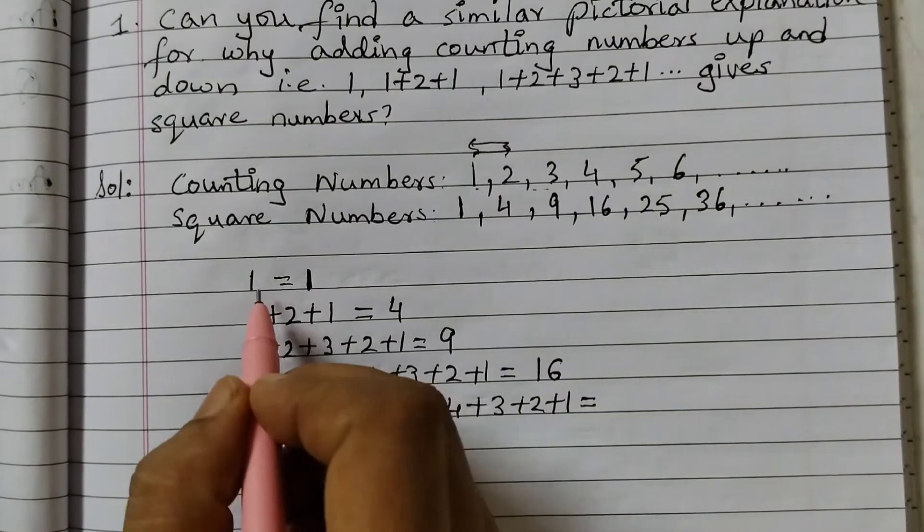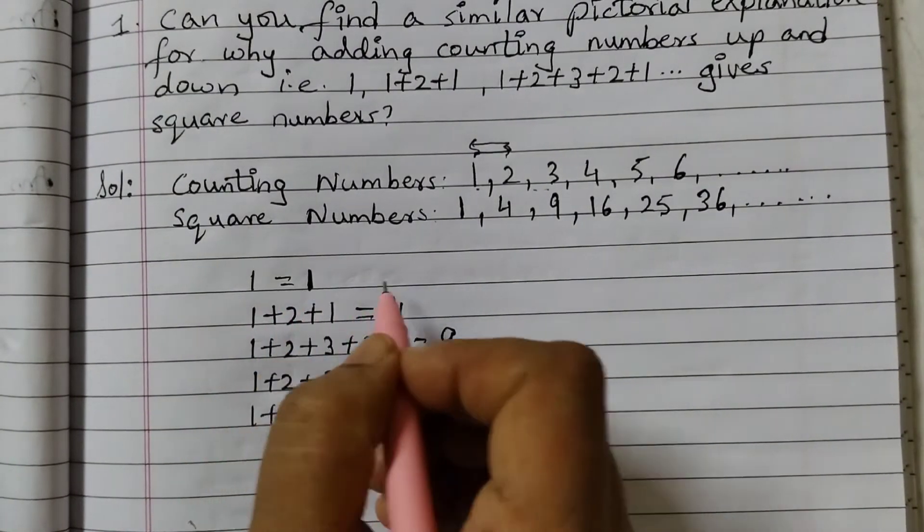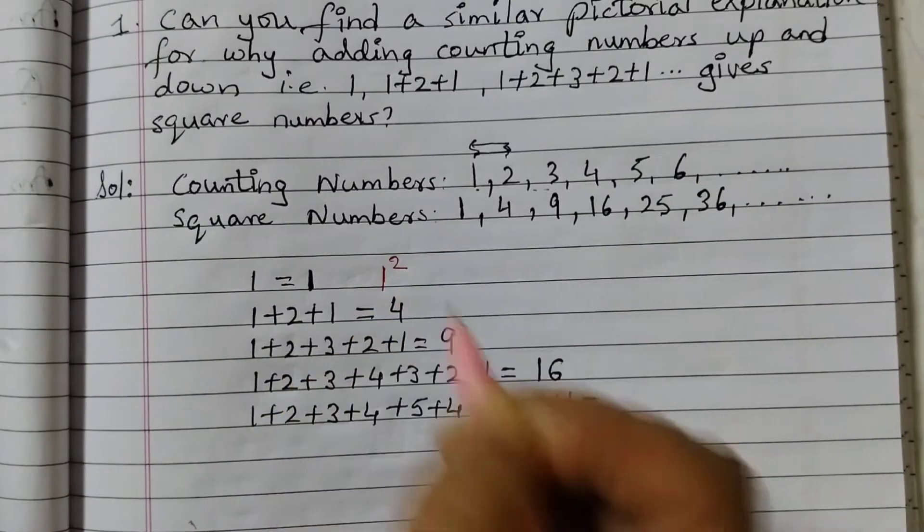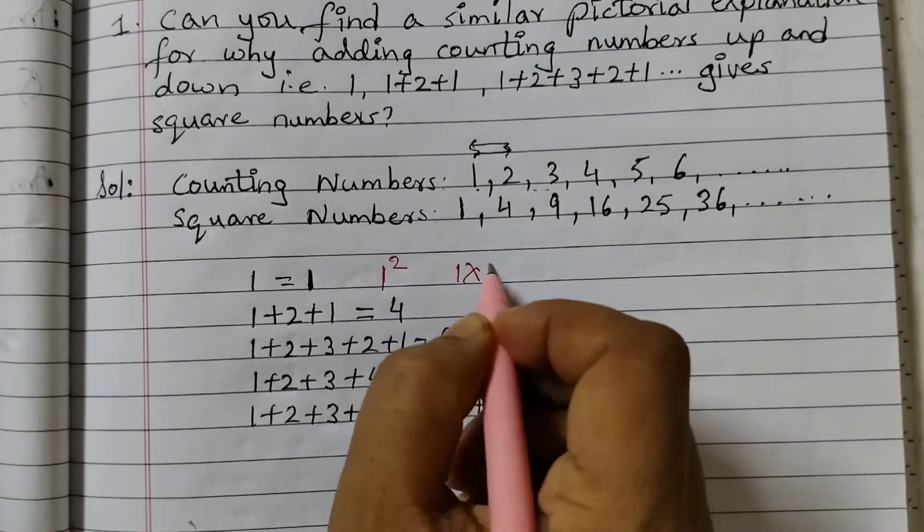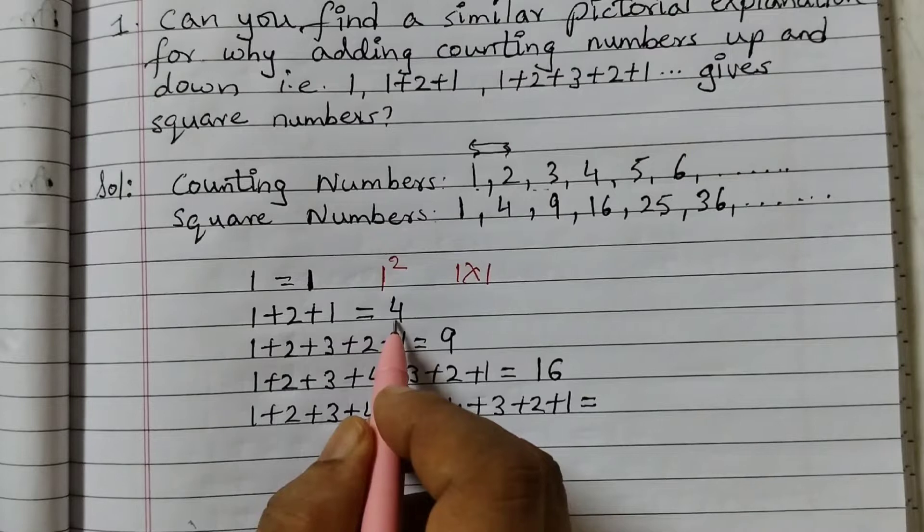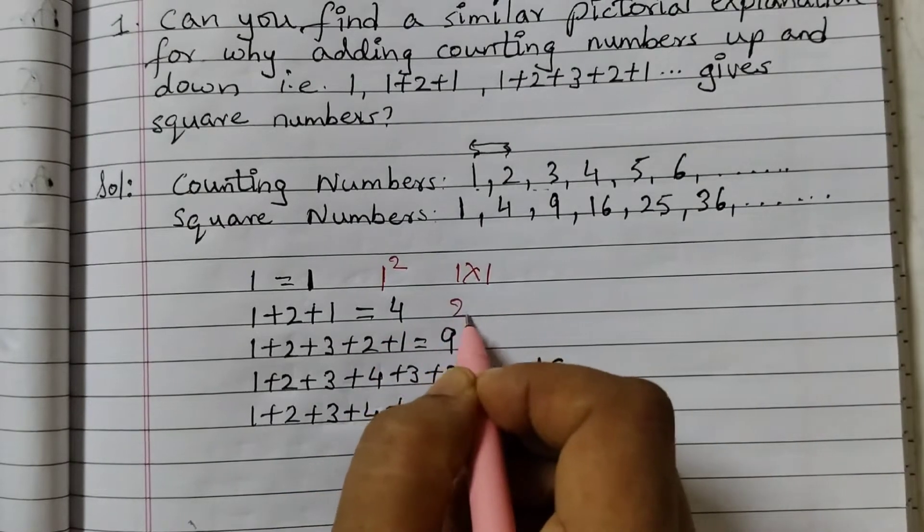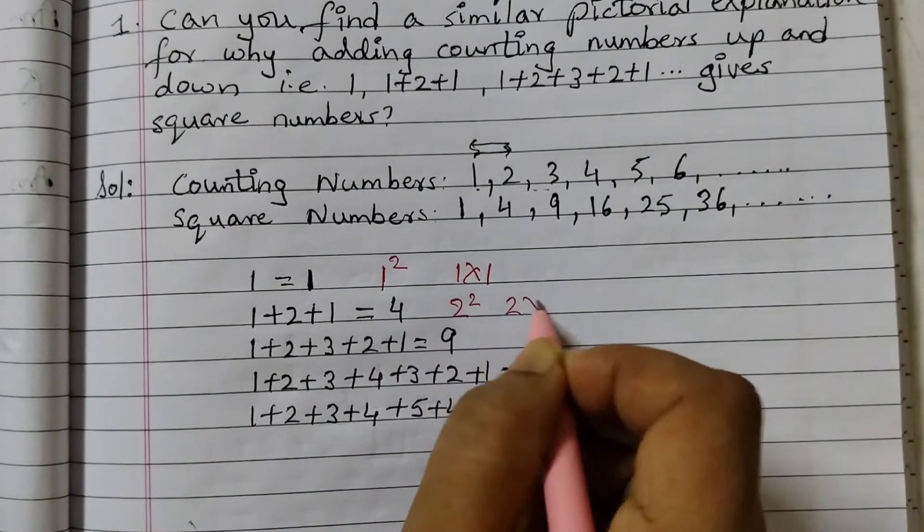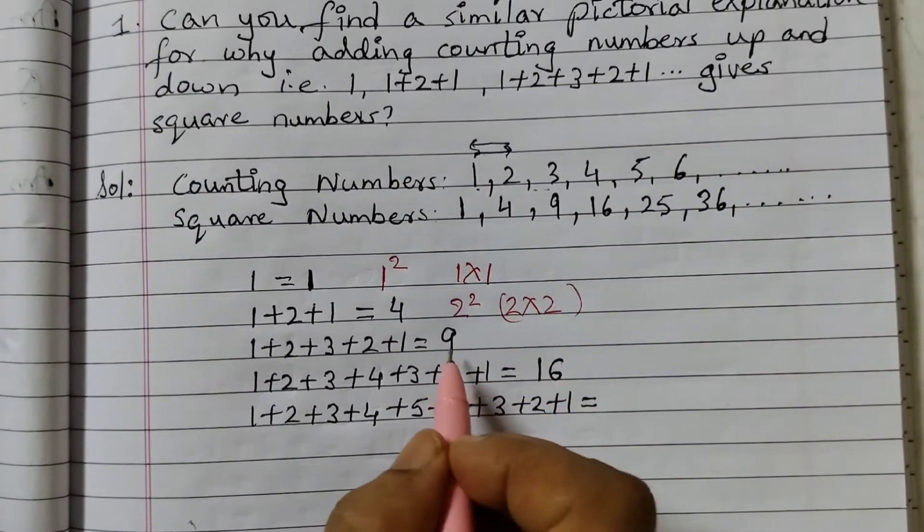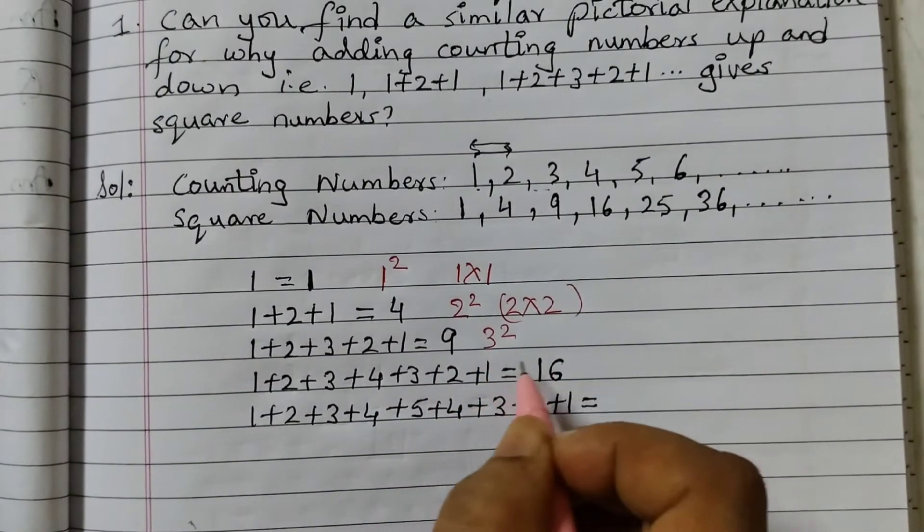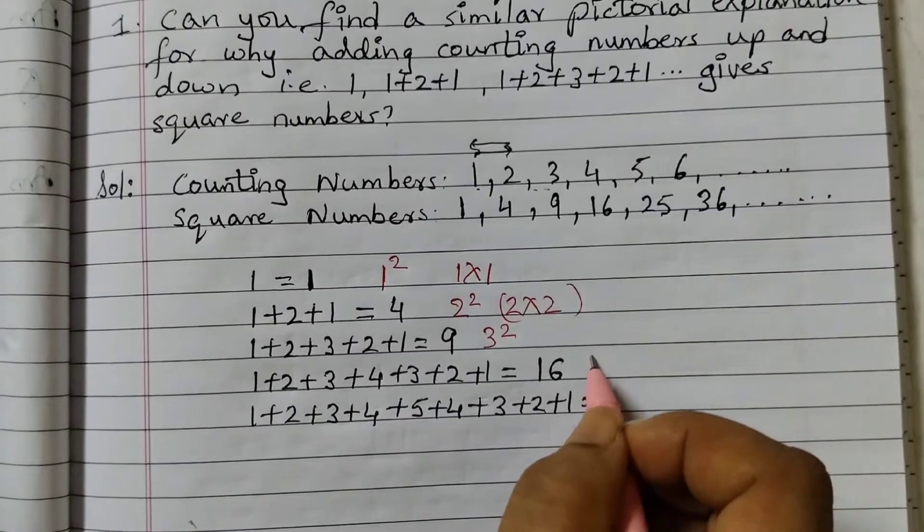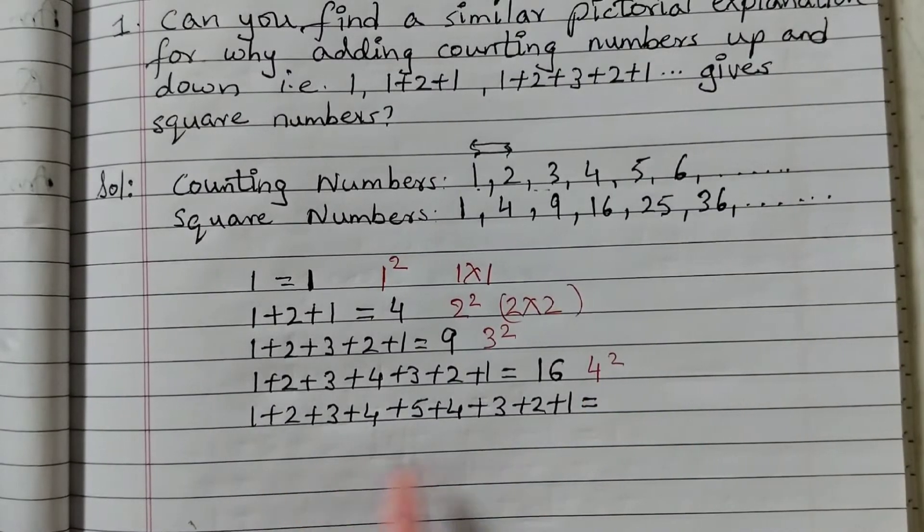Now if you observe carefully, 1 is equal to 1, that is actually 1 squared, 1 into 1. This is 4, 4 is 2 squared, that is 2 into 2. 9 is 3 squared, 3 into 3. This is 4 squared.